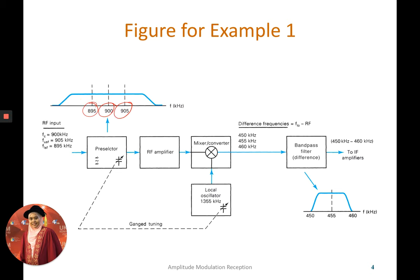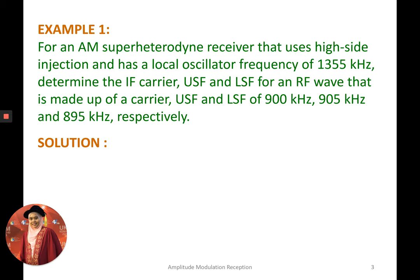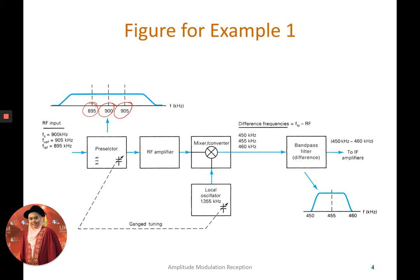So in the mixer, it's actually set about high side injection. So you need to remember high side when the local oscillator frequency is higher than RF frequency. So you need to minus the frequency of LO with the frequency of RF and you will get the IF frequency around 450 to 480 Hz.